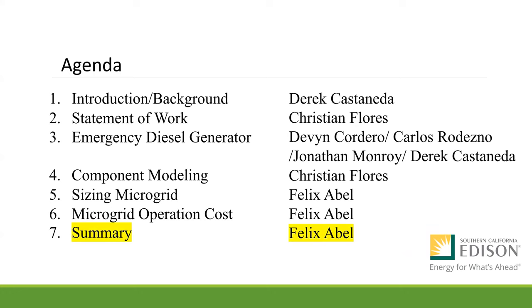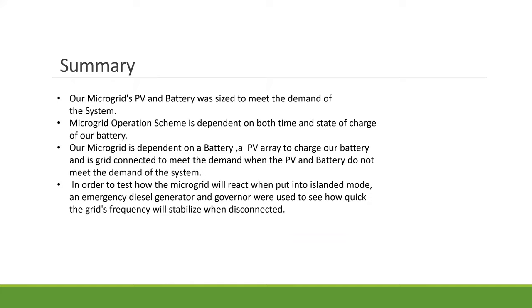For the summary, our microgrid PV and battery was sized to meet the demand of our system. Our microgrid operation scheme is dependent on both time and state of charge of our battery. Our microgrid is dependent on a battery, the PV array to charge our battery, and it is also grid connected to meet the demand when PV and battery do not meet the demand of the system. In order to test how the microgrid will react when put into isolated mode, we have an emergency diesel generator and governor to see how quick the grid's frequency will stabilize when it is connected. Thank you for coming to our presentation.